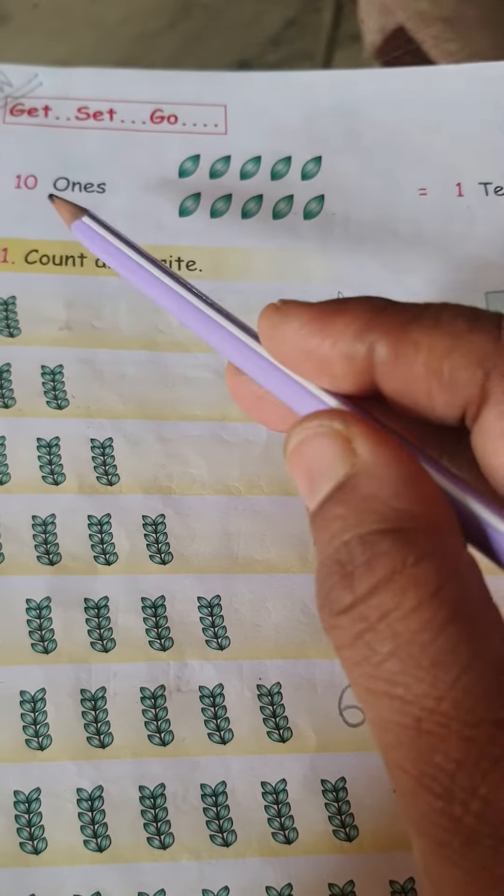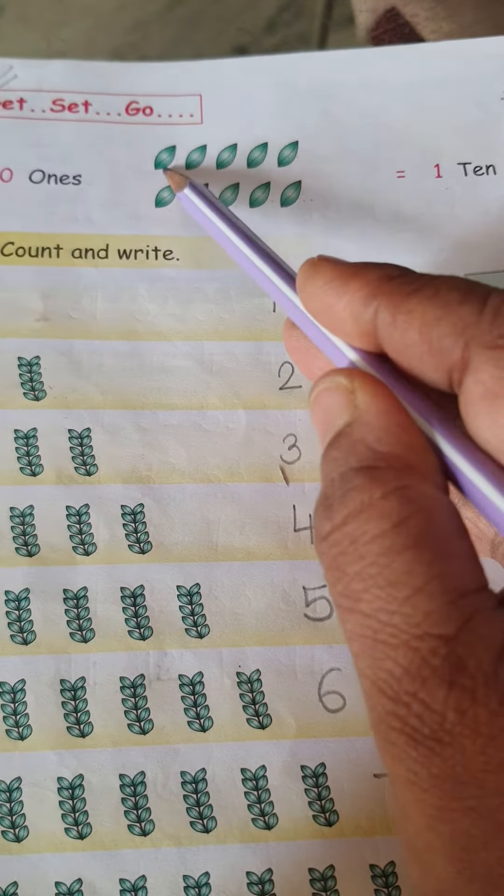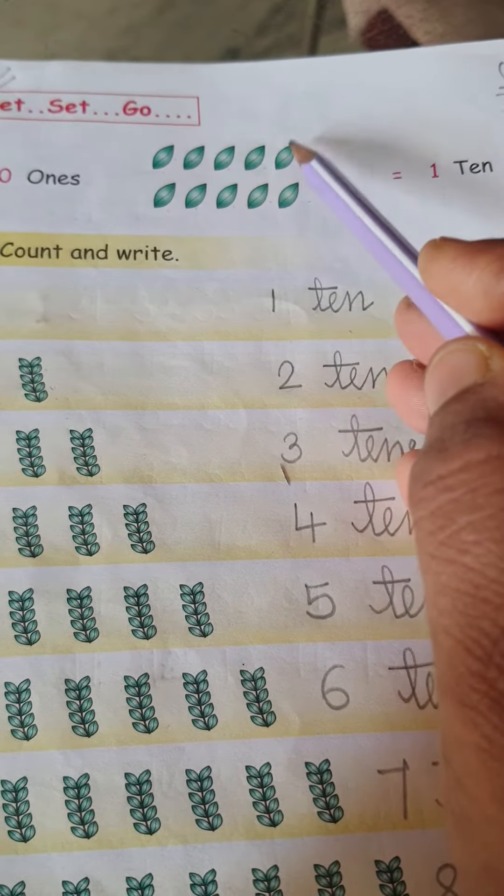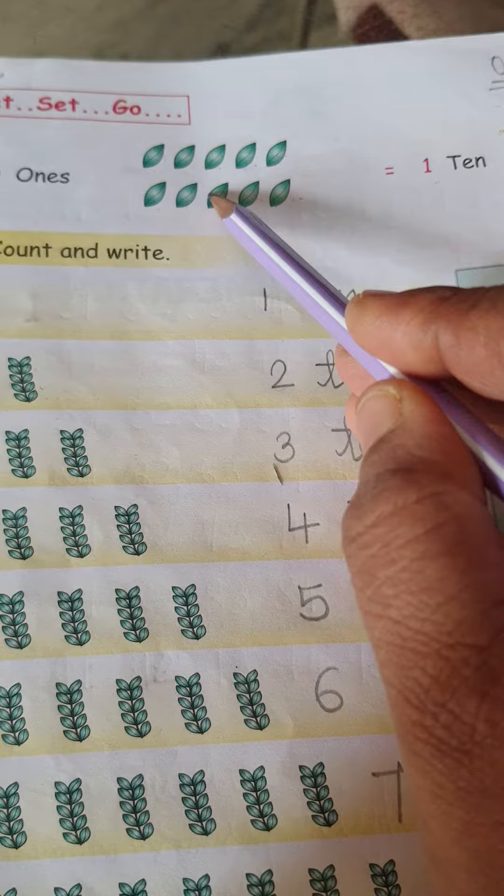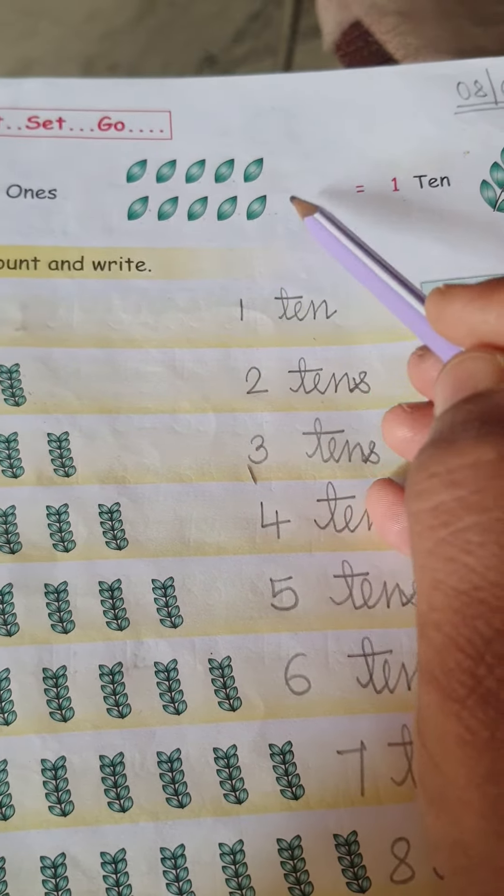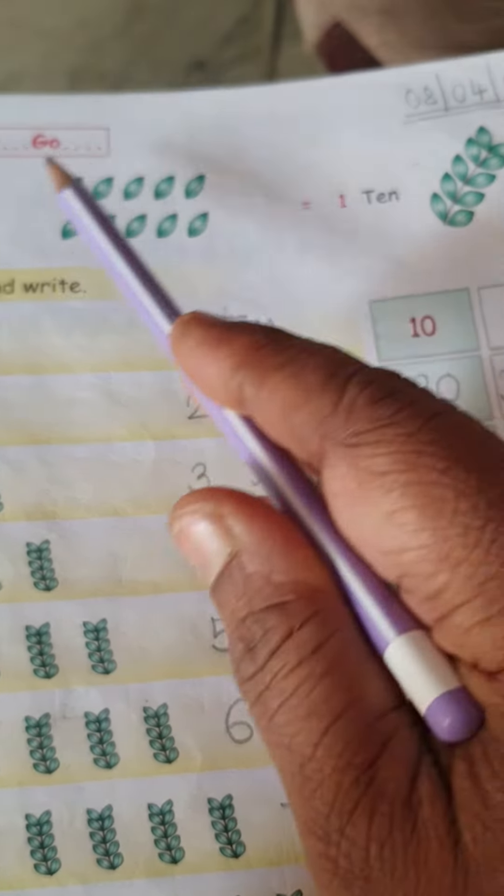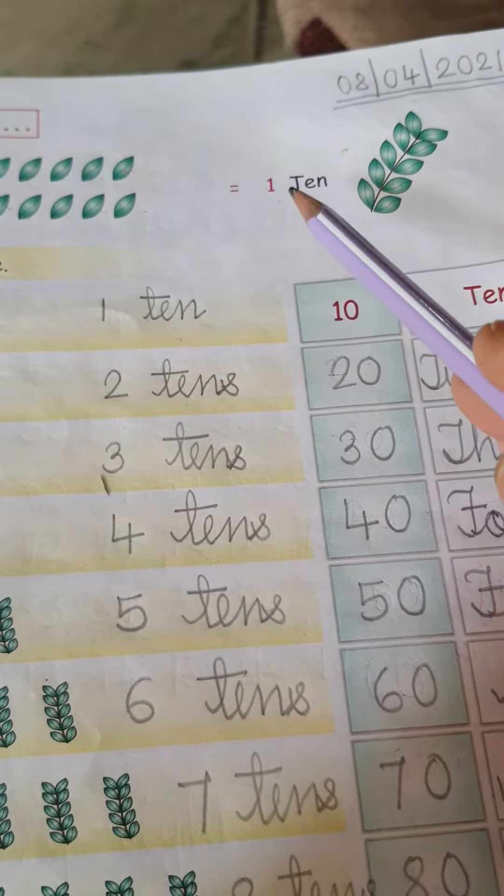First see what is written here: 10 ones. First count. 1, 2, 3, 4, 5, 6, 7, 8, 9, 10. Together 10 leaves means 1 ten. Means together 10, we can call 1 ten.